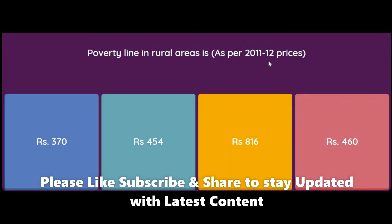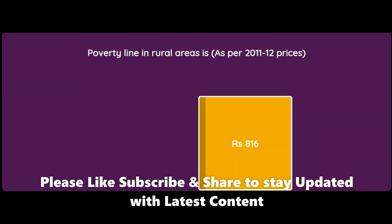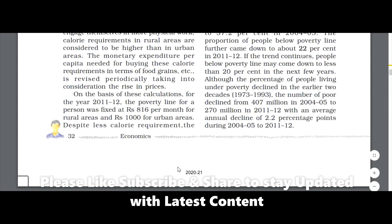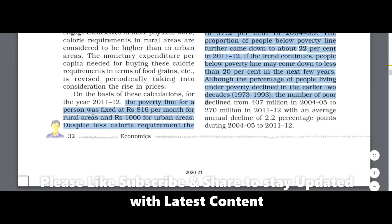Poverty line in rural areas is, as per 2011–12 prices — remember, you may get MCQs online for different years, but the new book has 2011–12 prices. So the poverty line in rural areas is: 370, 454, 816, or 460? The answer is Rs. 816. For reference, on page 32 of the book: for the year 2011–12, the poverty line for a person was fixed at Rs. 816 per month for rural areas and Rs. 1000 for urban areas.